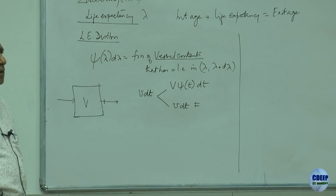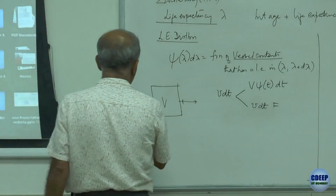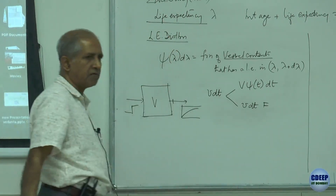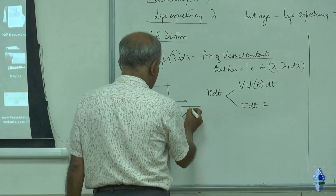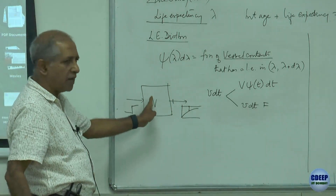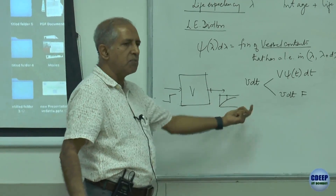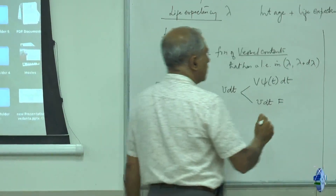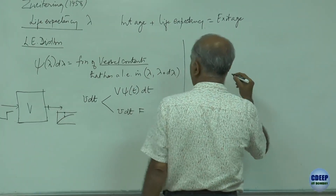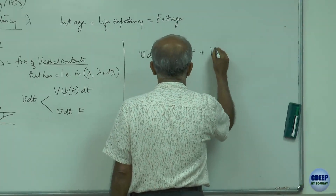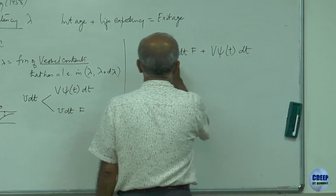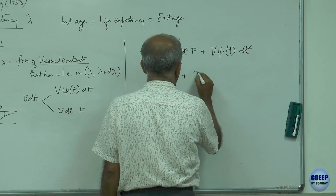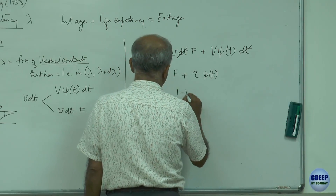The total volume of liquid grabbed is V·dt·F plus V·psi(t)·dt. Dividing by dt and then by V gives F plus tau times psi(t) equals 1, so psi equals (1 minus F) divided by tau. This is exactly the same form as the internal age distribution I(t).